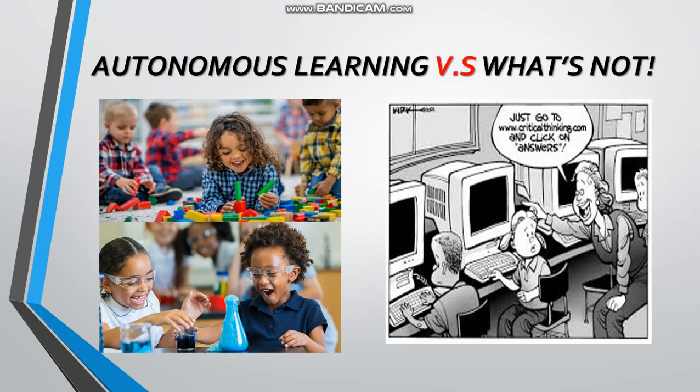Now let's look at autonomous learning and teaching in the classroom context. In front of you, you have three pictures — two on the left and one on the right. On the left-hand side you have what autonomous learning and teaching stands for. You can see that our learners are engaged and enthusiastic about the activities they are involved in. You can also see that they are working on their own, experimenting with objects independently.